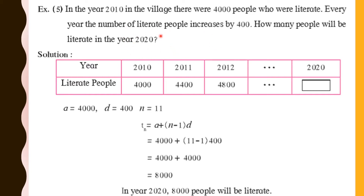Let's start the problem. In 2010, there were 4000 people who were literate. Every year, 400 more people become literate, and we need to find how many will be literate up to 2020.